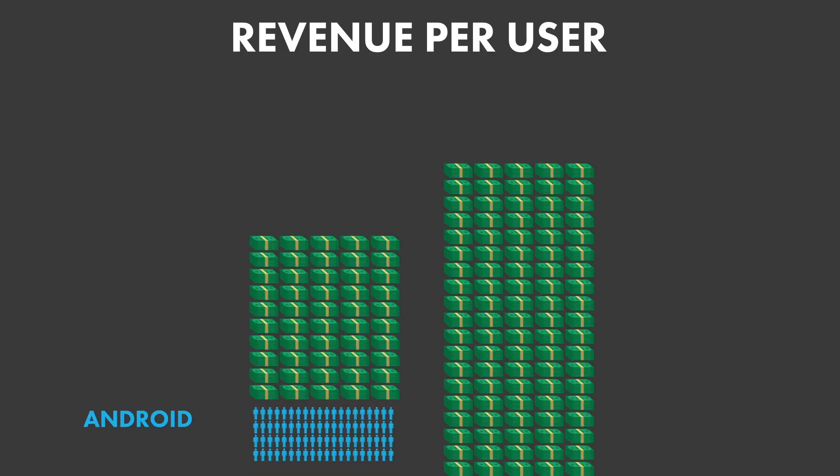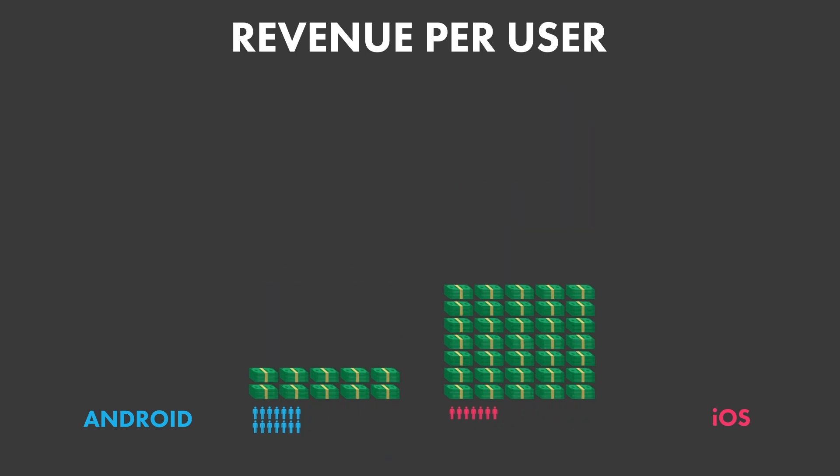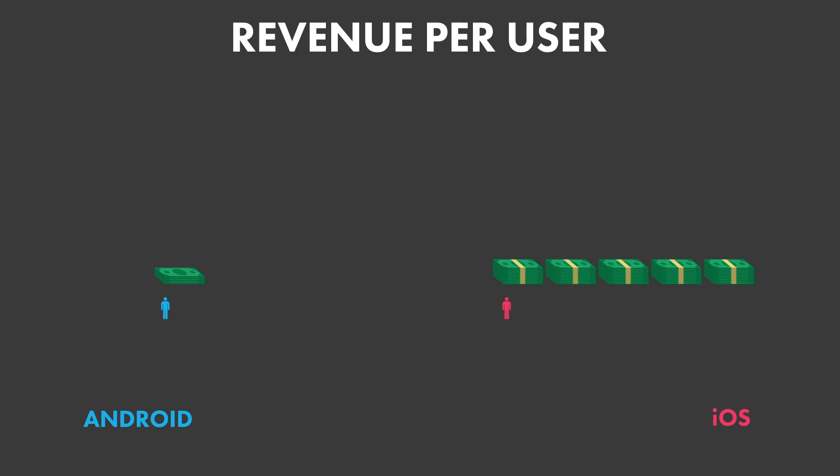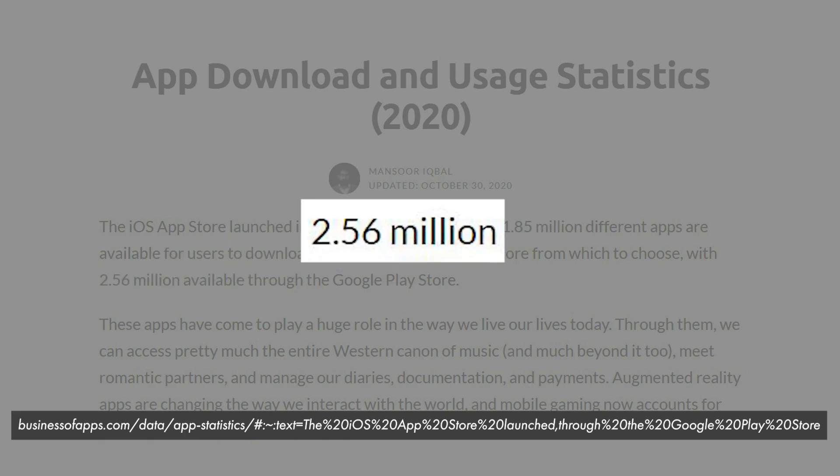Apps on iOS are making almost twice as much money, but remember there are fewer iOS users. The market share for Android was anywhere from 73 to 87% — we'll call it 80-20. So if you're making almost twice as much money from one-fifth as many people, each of those people is spending almost 10 times as much money. And it actually gets even worse if you consider how many apps there are — 1.85 million in the App Store and 2.56 million in the Play Store — so dividing this money per app, you also have a substantially worse outcome for Android.